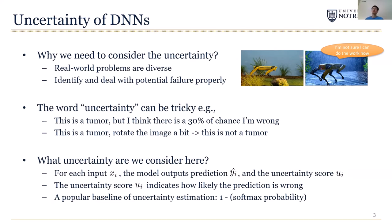The word uncertainty can be tricky because it can mean different things in different contexts. For example, when a model says there is a 30% chance my prediction is wrong, then this 30% is uncertainty. However, in some cases, a model can make multiple predictions on the same input by Monte Carlo dropout or image augmentation. Then the disagreement between these multiple predictions is also a kind of uncertainty. So we want to make sure everyone is on the same page. In this work, the uncertainty is considered to be a scalar between 0 and 1 that indicates the probability the model's prediction is wrong.